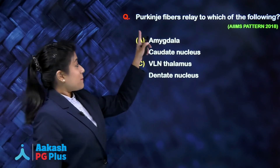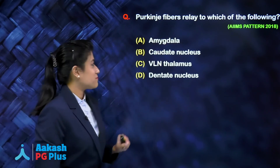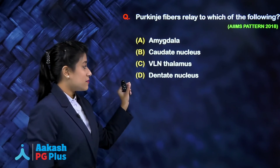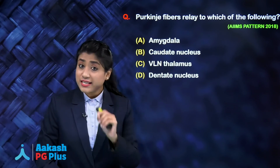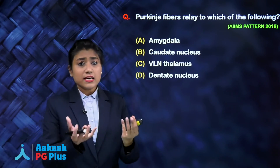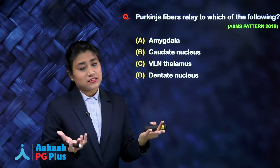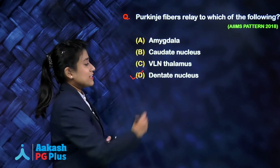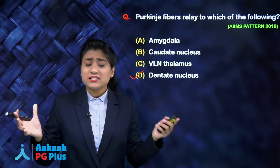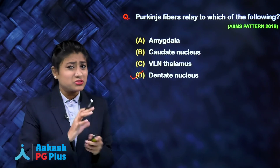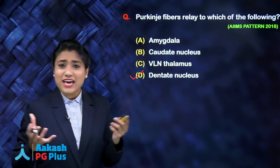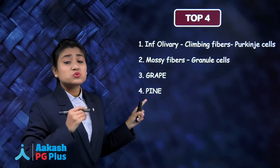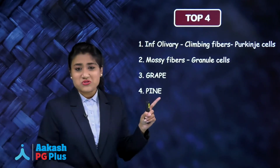Question: Purkinje fibers relay to which of the following — amygdala, caudate nucleus, VLN thalamus, or dentate nucleus? Purkinje fibers end on the deep nuclei, and the dentate nucleus is one of the four deep cerebellar nuclei. So the answer is dentate nucleus. Remember the four key relationships: inferior olivary nucleus → climbing fibers → Purkinje cells; mossy fibers → granule cells.